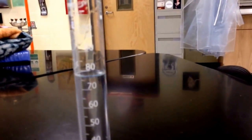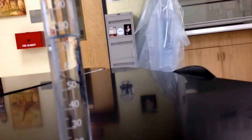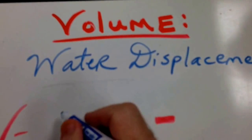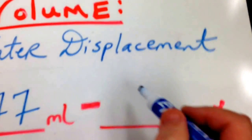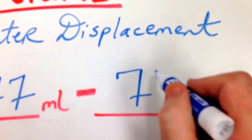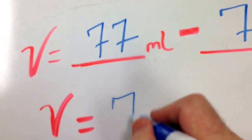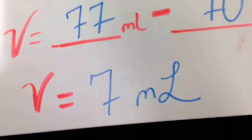Next, drop your object into the cylinder and see how far up the water goes. And when we read this at eye level, we notice that it goes up to 77 milliliters. So it actually went from 70 milliliters to 77. We put 77 as our final volume, minus 70 milliliters, and we get 7 milliliters as the volume of our irregularly shaped object, which was our marble.